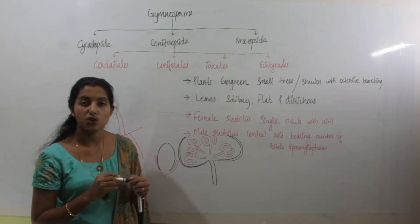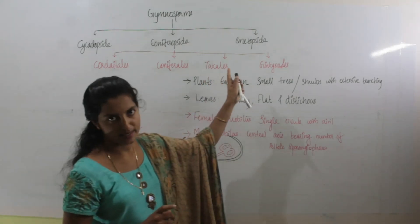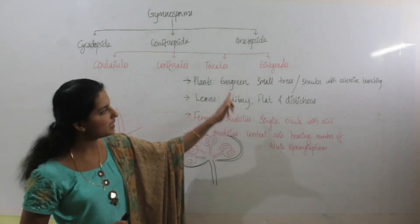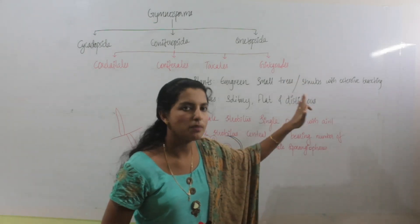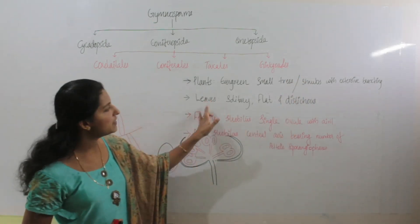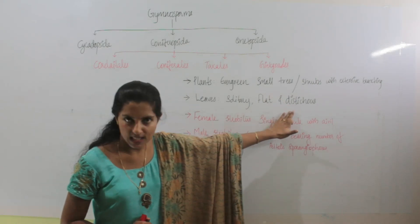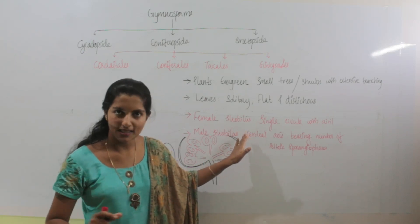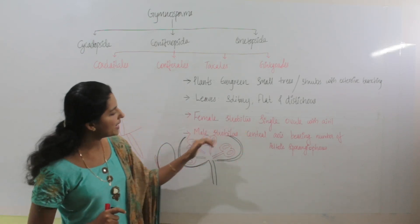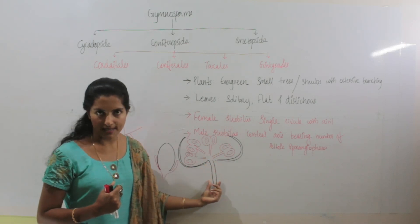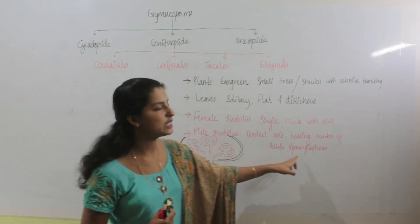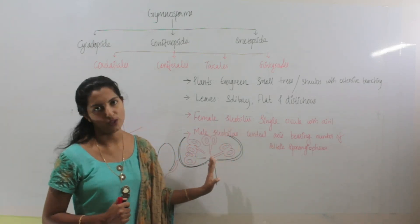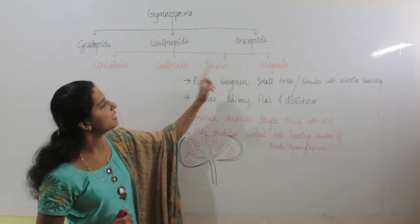These are the characters of the order Taxales: living members, plants are evergreen small trees or shrubs with extensive branching. Leaves are solitary, flat, and show distichous arrangement. Female strobilus is represented by a single ovule protected within an aril. Male strobilus has a central axis with peltate sporangiophores, each bearing two sporangia.